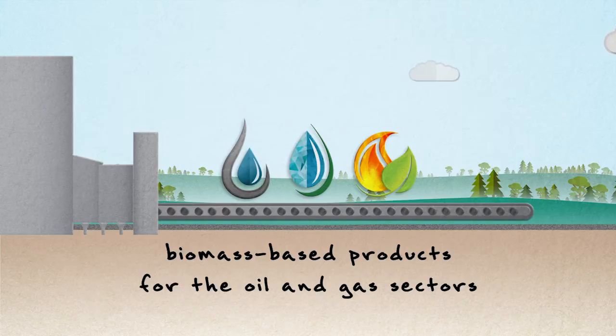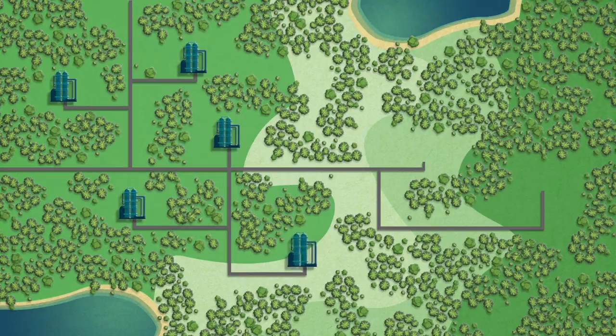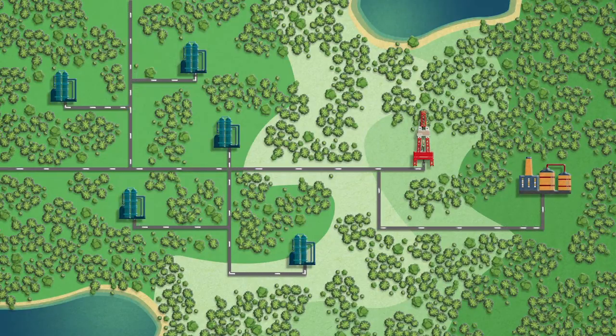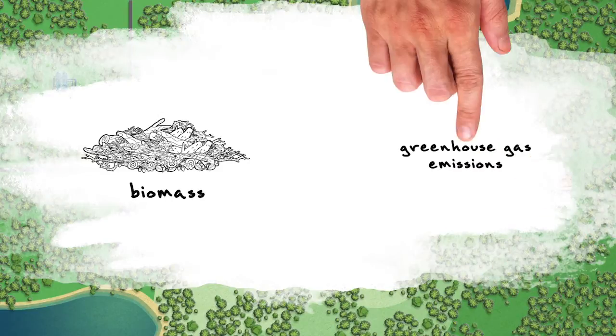The gas industry transports non-renewable natural gas along an extensive network of pipelines and uses it to generate the heat and steam required for oil sands extraction and refining processes. Using biomass instead can lower dependency on non-renewable resources and significantly reduce greenhouse gas emissions.